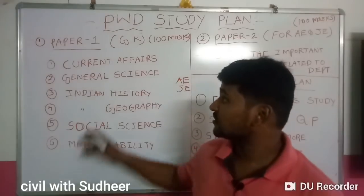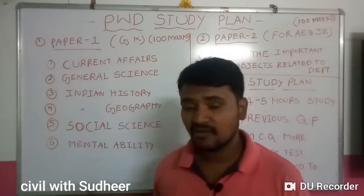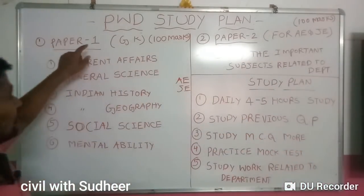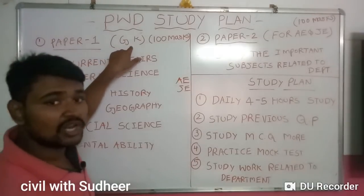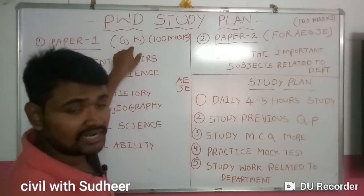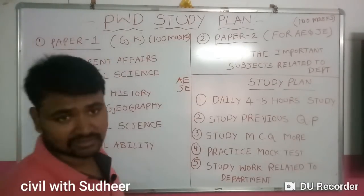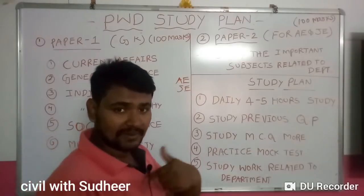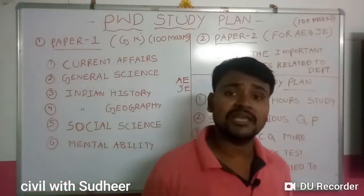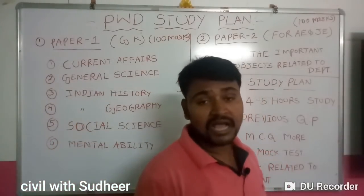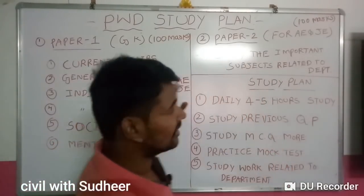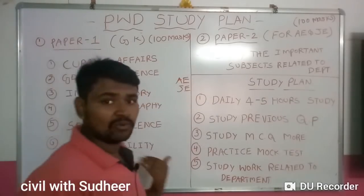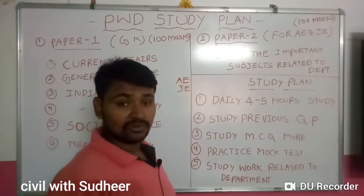The first one is Paper 1. Paper 1 is GK — General Knowledge. General Knowledge is 100 marks. The GK questions are ENA-type. We have to prepare for those ENA questions. It is important.